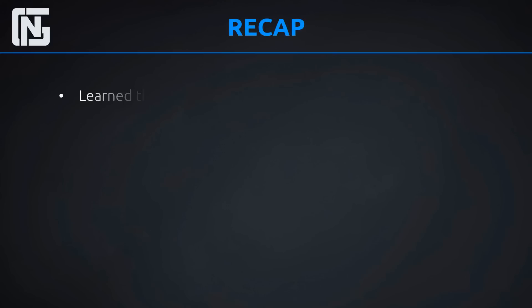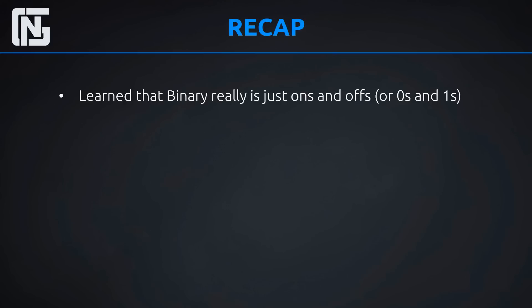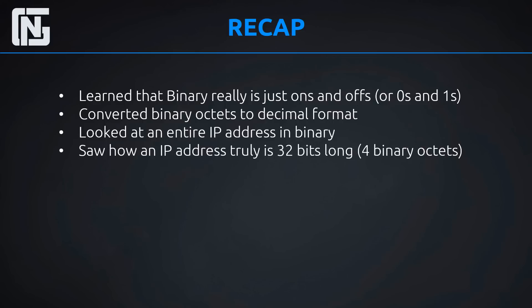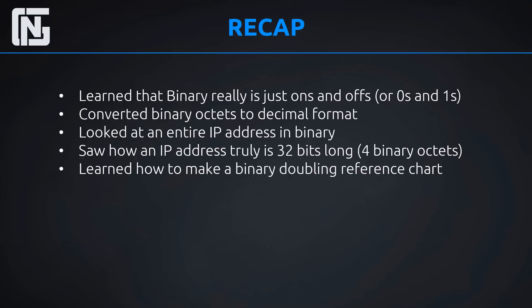Here's a quick recap of the full lesson. We learned that binary really is just ones and offs — we saw that by looking at a switch with a one and a zero, showing how you can turn something on and off, and how that relates to binary. We converted binary octets into decimal format, and we looked at an entire IP address in binary. We also looked at how an IP address is truly 32 bits in length, composed of four binary octets, each containing eight bits — eight times four equals 32.